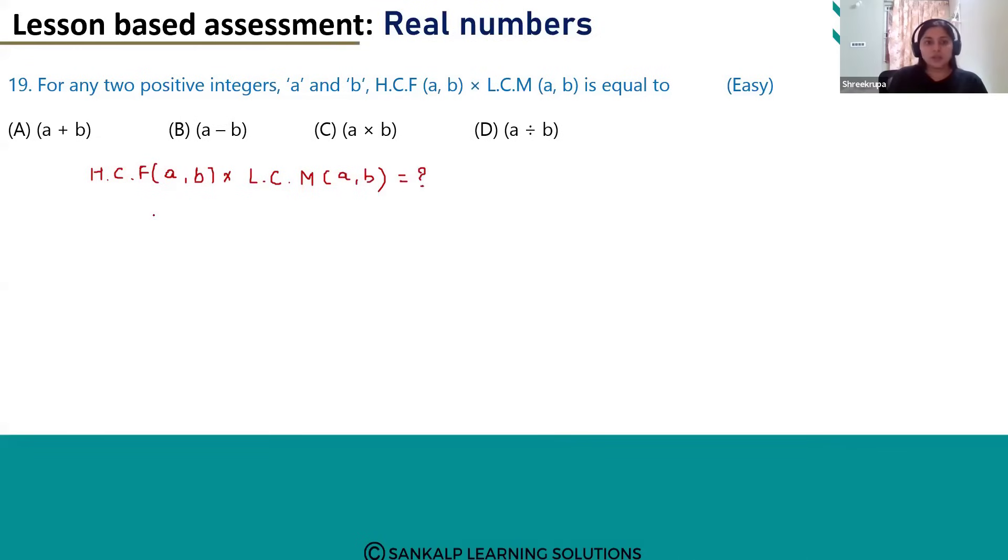So when we take two values for A and B, for example, assume A is equal to 8 and B is equal to 6.